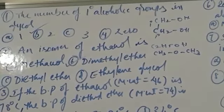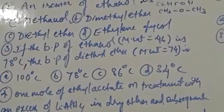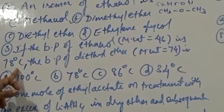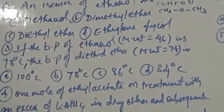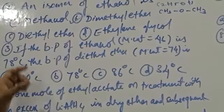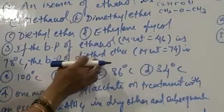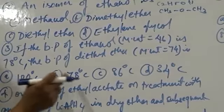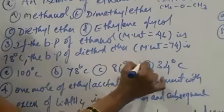If the boiling point of ethanol (molecular weight 46) is 78°C, what is the boiling point of diethyl ether (molecular weight 74)? Ethyl alcohol's boiling point is higher than ethers, alkyl halides, and corresponding alkanes because ethyl alcohol is soluble in water and forms intermolecular hydrogen bonds. Due to intermolecular hydrogen bonding, its boiling point is higher. So the boiling point of diethyl ether must be less than 78°C. Option D, 34°C, is correct.